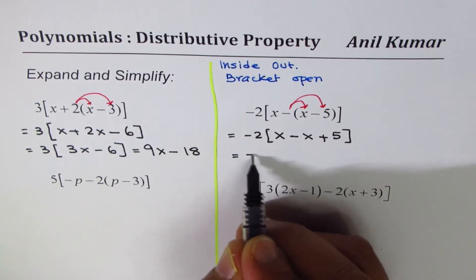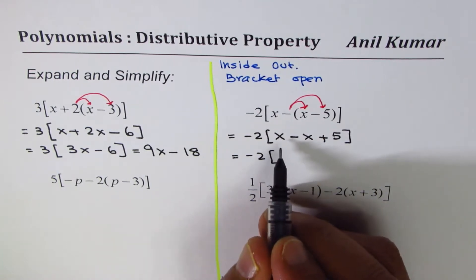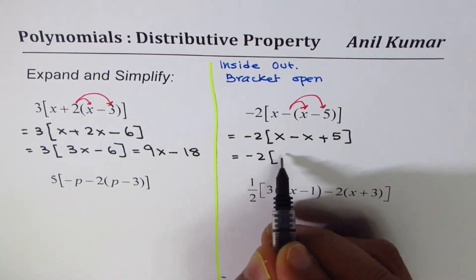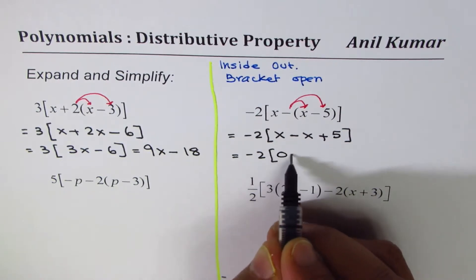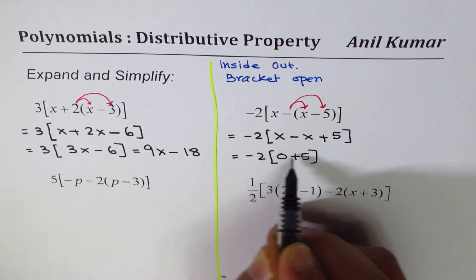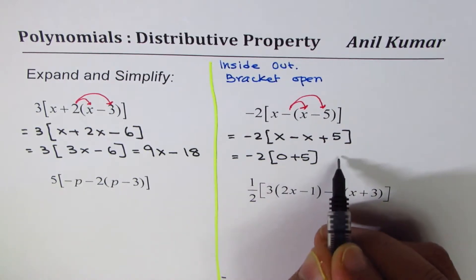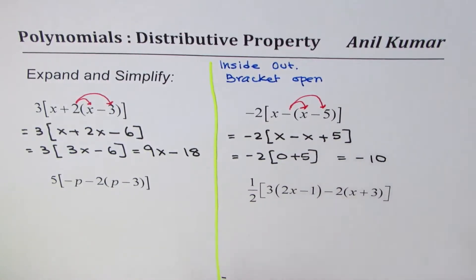And now you can simplify this by adding x minus x, which is 0 plus 5. If you want, you can write 0. Let me write, and then we'll expand minus 2 times 0 is 0, and minus 2 times 5 is minus 10. So that will be your answer.